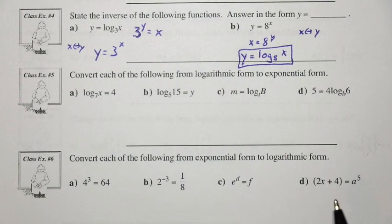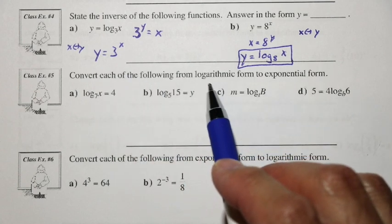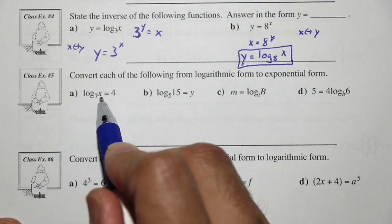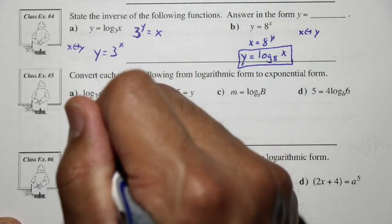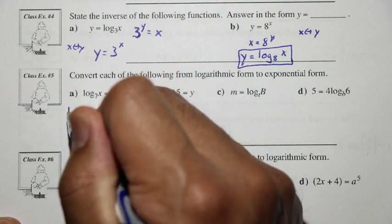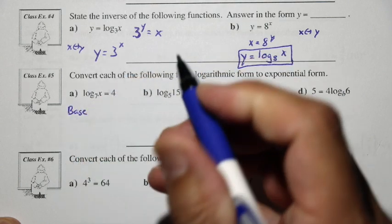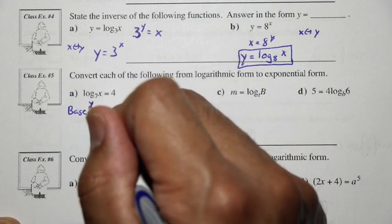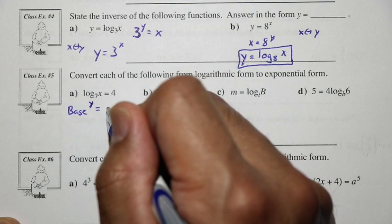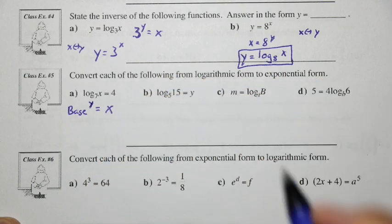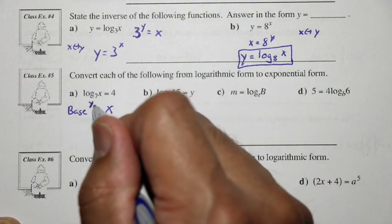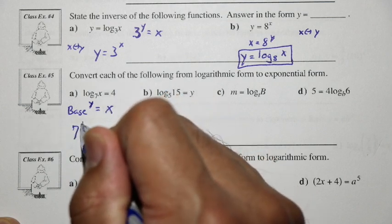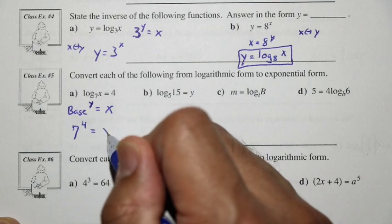Let's take a look at class example 5. We're going to convert each of the following from log form to exponential form. Here we have log base 7 of x equaling 4. The format is: take the base of the logarithm, raise it to the exponent of the result, and make it equal to the argument. So we have 7 to the exponent 4 is equal to x.